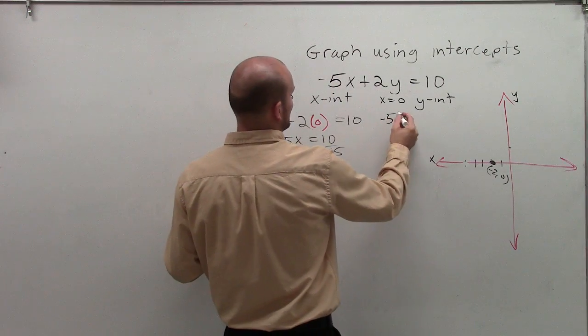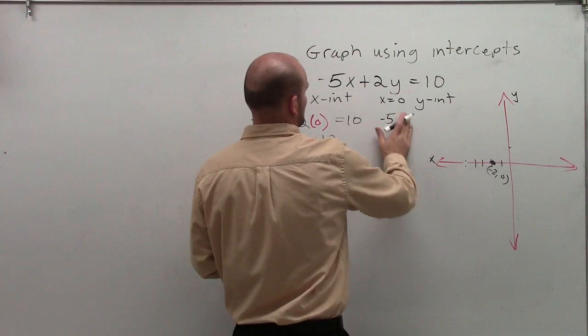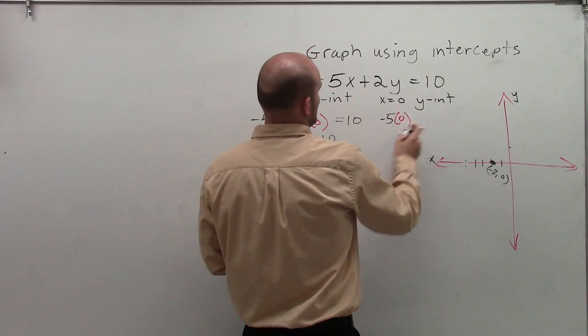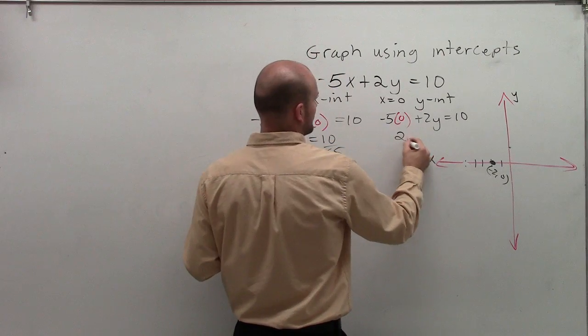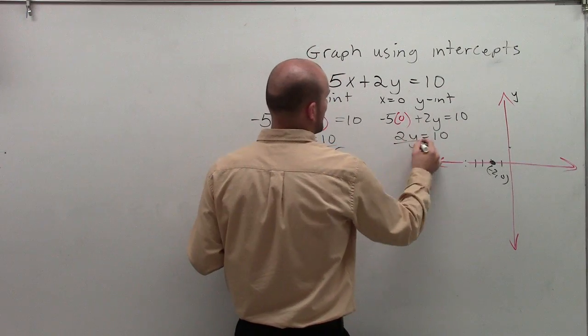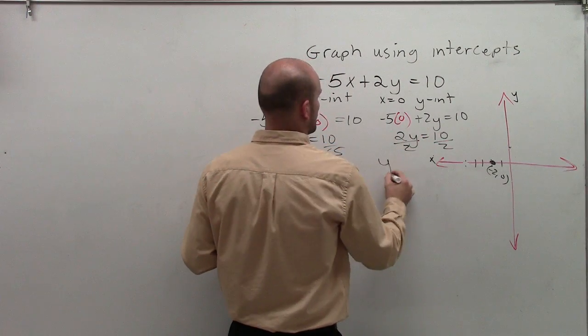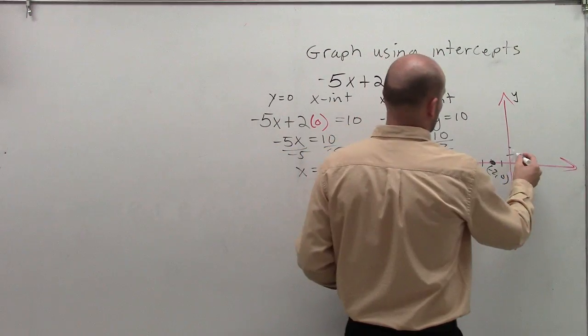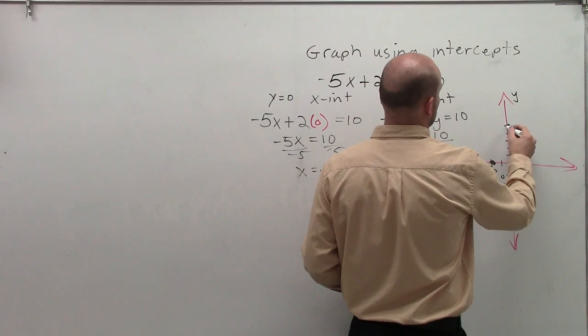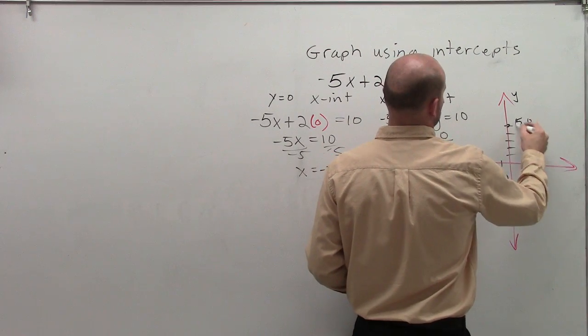All right, so then I just do negative 5 times 0 plus 2y equals 10. So therefore, I get 2y equals 10 divided by 2. y equals 5. So then I go up, 1, 2, 3, 4, 5. 5 comma 0.